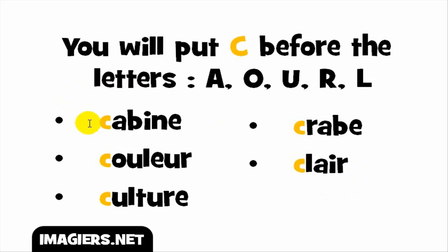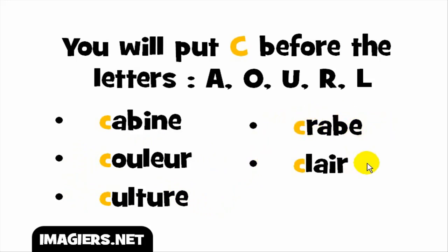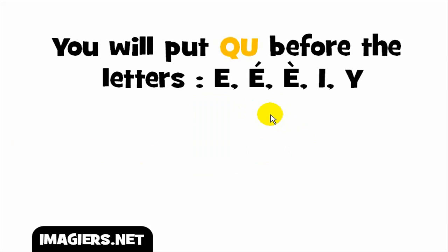Let's see all the words one more time. The first group includes: cabine. But then we have another way to write the /k/ sound, especially when it combines with certain vowels.